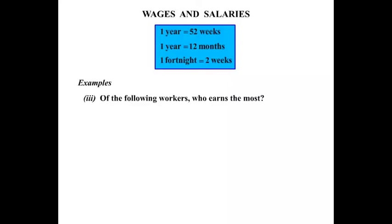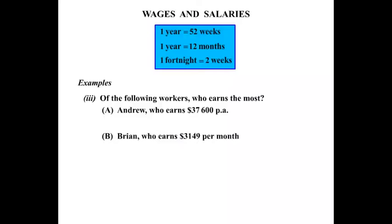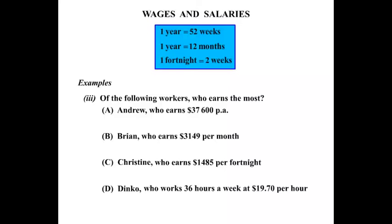Our third example: of the following workers, who earns the most? We've got Andrew who earns $37,600 per annum — per annum means per year. Brian, who earns $3,149 per month. Christine, earning $1,485 per fortnight. And finally Dinko, who works 36 hours a week at $19.70 per hour.